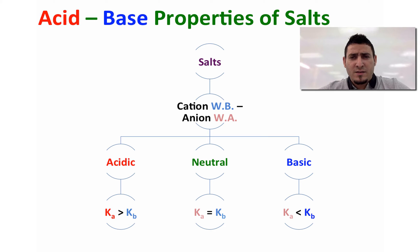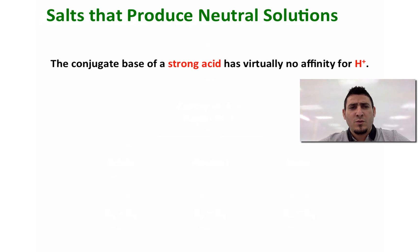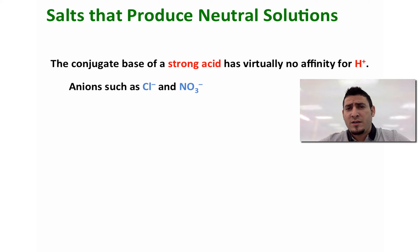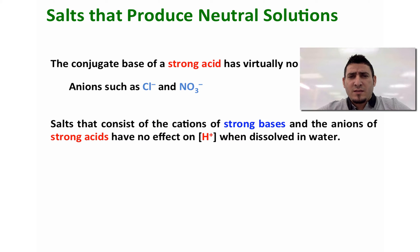Now let's further discuss these properties, and we will first start with the salts that produce neutral solutions. The conjugate base of a strong acid has virtually no affinity to H+. Examples of these ions are chloride and nitrate, which are the conjugate bases of strong acids — hydrochloric acid and nitric acid respectively. So these ions have no affinity to H+. Salts that consist of cations of strong bases and anions of strong acids have no effect on the concentration of H+ in solution when dissolved in water.